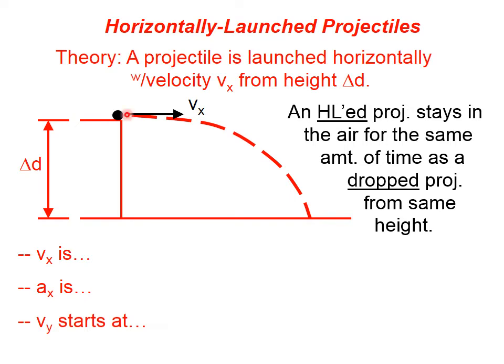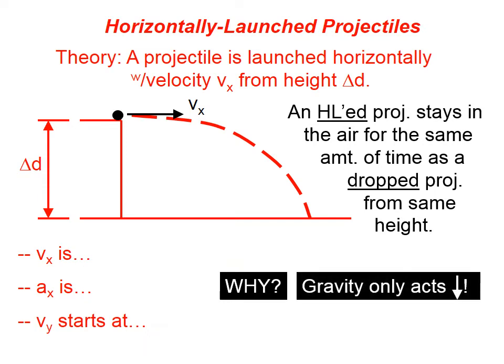What that means is, if we were to take this projectile and simply drop it off the cliff, the amount of time that it takes for that projectile to hit the ground is going to be the same amount of time that the projectile would be in the air when it takes this curved path and lands out to the right. Why is that? Well, it's because gravity only acts downward — gravity does not act sideways. So it doesn't speed up this projectile in the x direction, nor does it slow it down, because we're ignoring air resistance. Both are launched from the same height, so they're going to stay in the air for the same amount of time, whether they're dropped or launched horizontally.